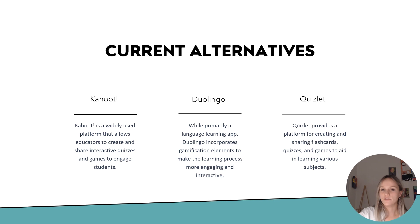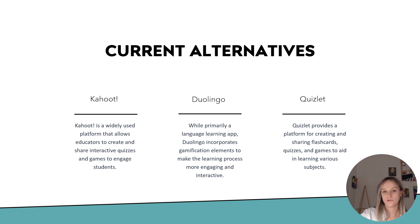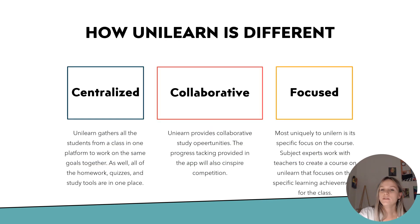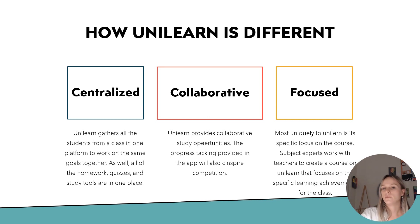The current alternatives to apps like UniLearn include Duolingo, Kahoot, and Quizlet. I really do think all these apps are fantastic in their own ways and I've personally used all of them, but these apps are not aiming to achieve the goal that UniLearn is aiming to achieve. These apps are not tied to any specific courses and they are not necessarily academic. What they excel in though is their interactive and engaging nature. I want to draw inspiration from this aspect of these apps for UniLearn but differentiate in many ways.